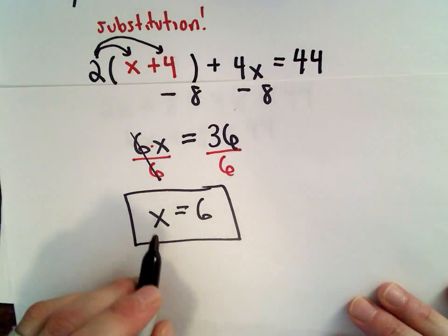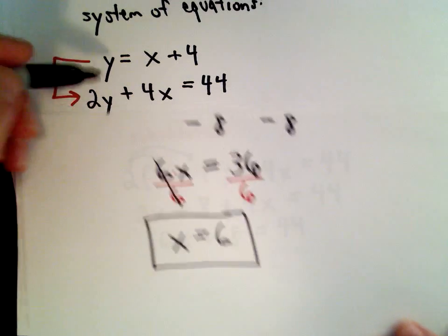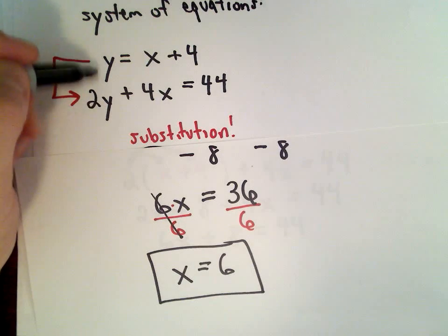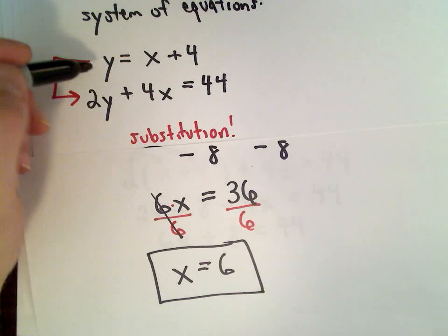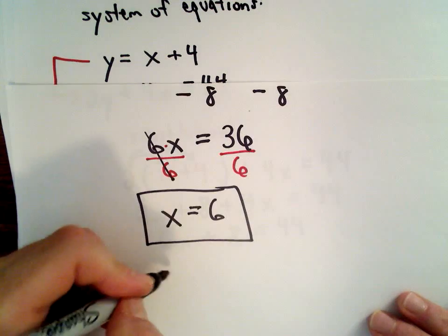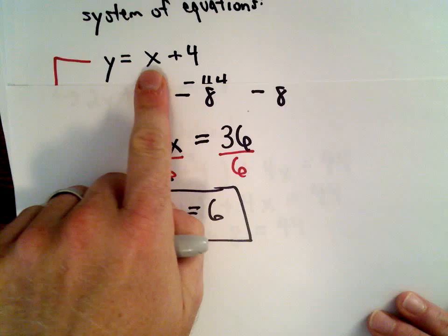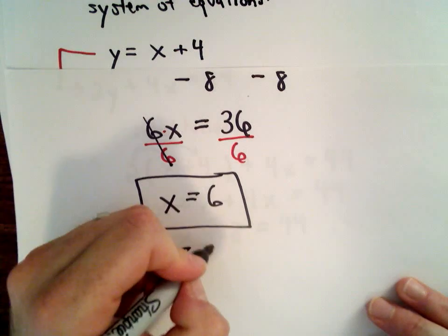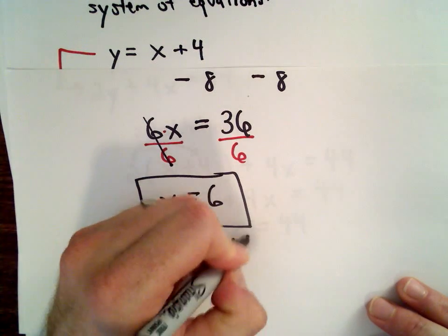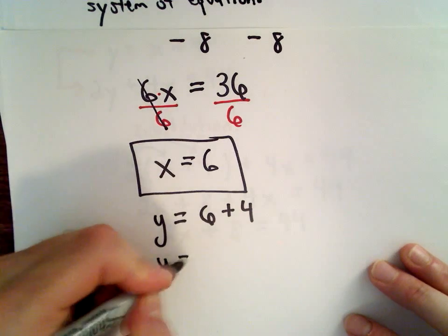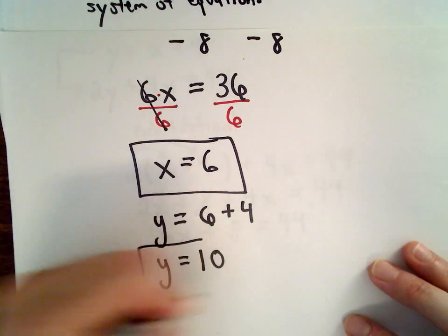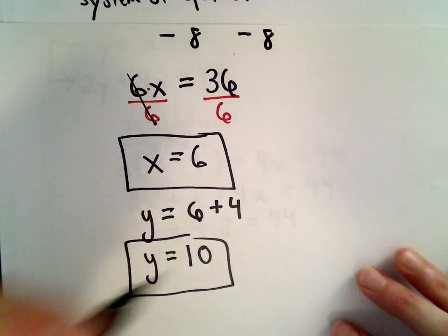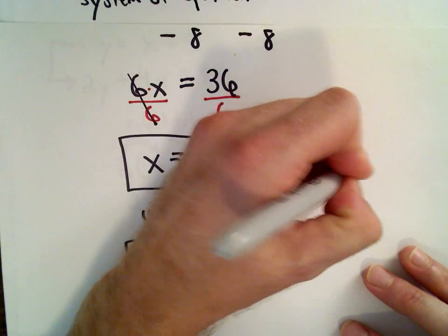Now I've got my value for x. I can go back and put it into either equation and solve for y. The first equation is much easier to use, so we have y equals x plus 4. We know that x equals 6, so 6 plus 4 is 10. My solution is the ordered pair 6 comma 10.